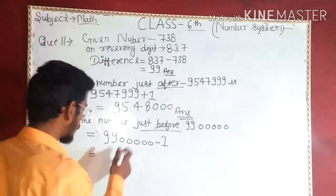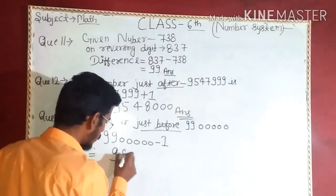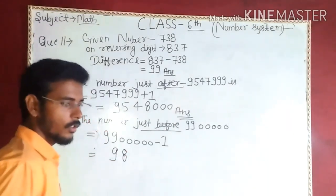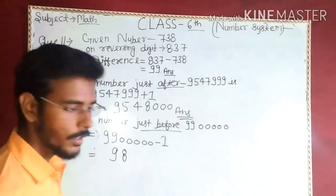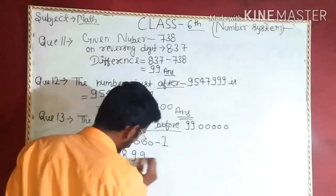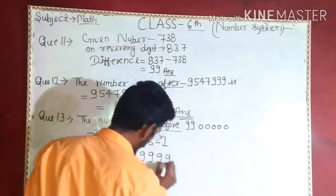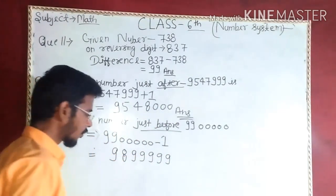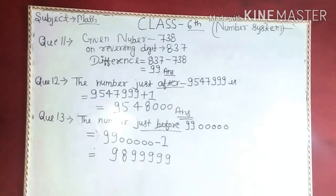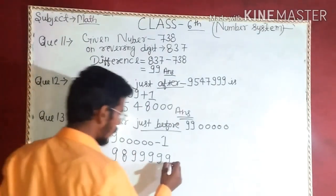The answer is 9, 8, 9, 8, 9, 9, 9, 9, 9, 2, 9 — this is the answer.